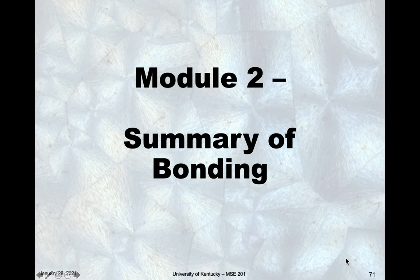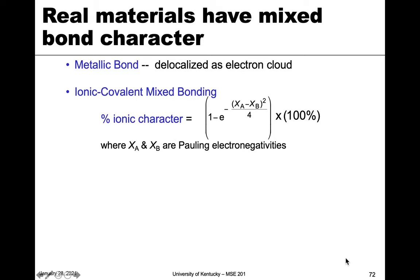We've talked about ionic, covalent, metallic, and secondary bonding, so now I want to go over a summary and review of bonding. The first thing I want to mention is that when we talk about real materials and real solids, we're not often talking about just one type of bonding — we often have mixtures. We could have metallic bonding or mixtures of ionic and covalent.